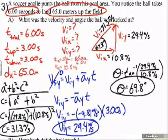Labeling that on my diagram up here, we know that the initial launch velocity was that 31.3 meters per second at 69.8 degrees relative to the horizontal.